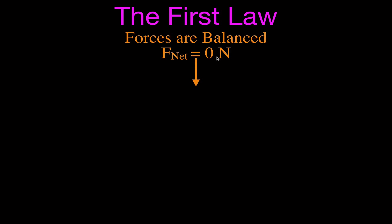The forces are balanced, the net force is equal to zero Newtons. If your forces are balanced and the net force equals zero Newtons, then there's no acceleration, and that means you're going to be moving with a constant velocity. So all four of those things go together: forces are balanced, net force zero, no acceleration, and constant velocity.